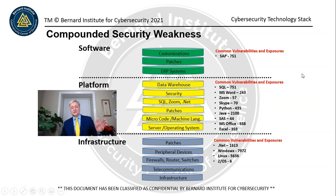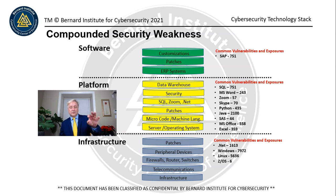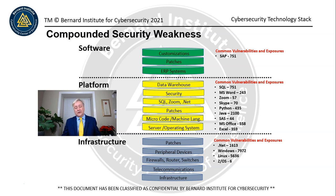Compounded security weakness: we have a number of vulnerabilities within each of the different layers of the technology stack — infrastructure, platform, and software. Any one of these vulnerabilities could be exploited, and many different types of breaches have been caused by different vulnerabilities within different layers. We're going to talk about the weaponization of software in another video, but specifically about a worm — a type of malicious software that has been weaponized.